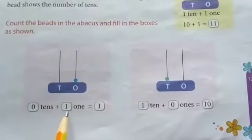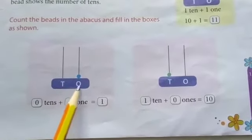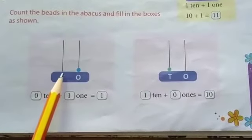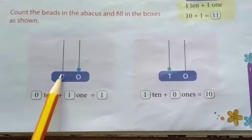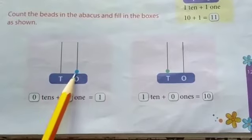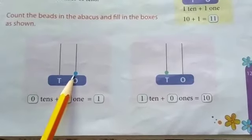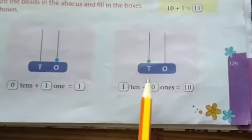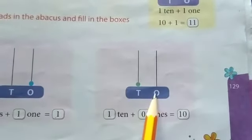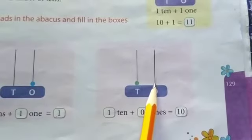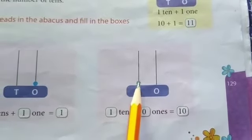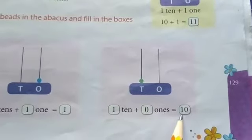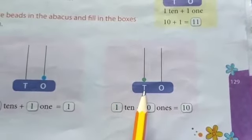Zero tens plus one one is equal to one. In the tens place there is no number, so we put zero. In the ones place there is only one bead, so one. The answer is one only. Here, ones place has no bead and tens place has one bead. So one ten plus zero ones is equal to ten. One ten is equal to ten.